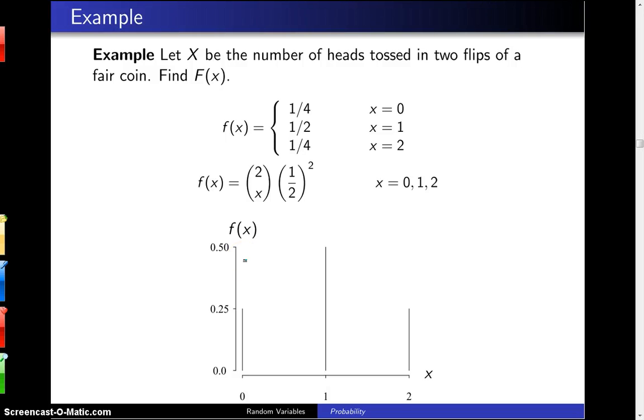Let X be the number of heads that appear in two flips of a fair coin. Find the cumulative distribution function capital F of X.